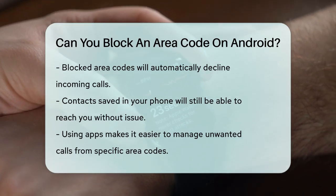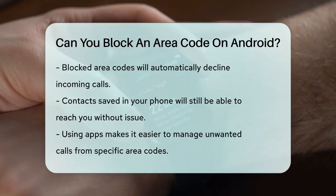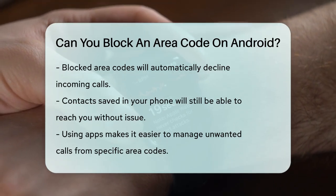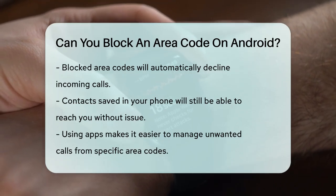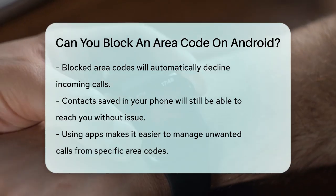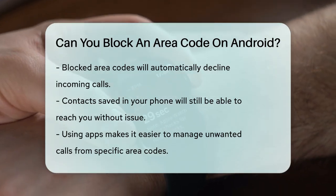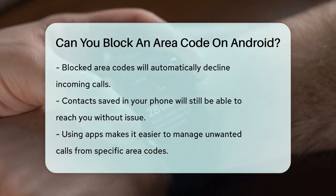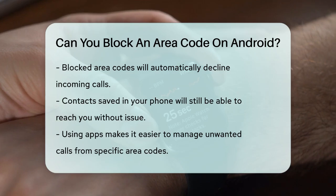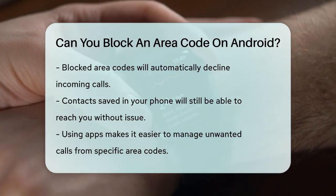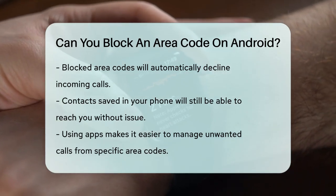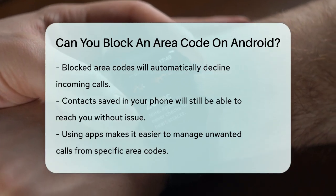Additionally, calls from numbers saved in your contacts will always come through, so you don't have to worry about missing important calls. While the built-in Android features don't directly allow blocking entire area codes, using the right apps can make it easy to manage and block unwanted calls from specific area codes.